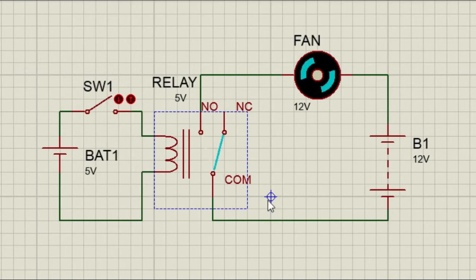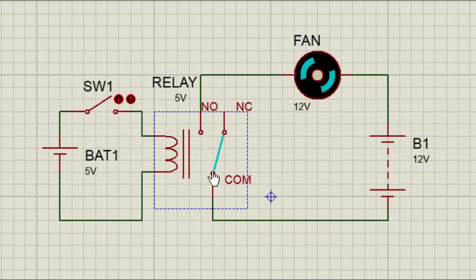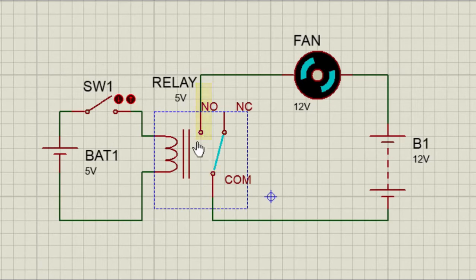Generally, a single pole double-throw relay has five terminals. Two terminals are used to energize the coil of the relay, and the other three are the controlled switch terminals for the connected device. These three terminals are the common terminal, the normally open, and the normally closed terminal.